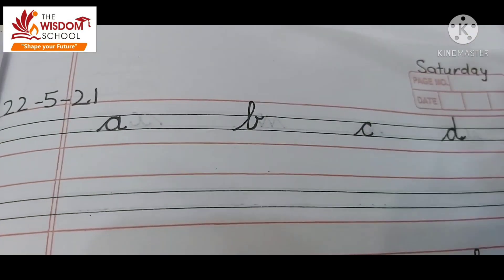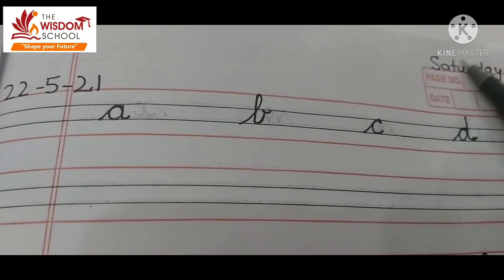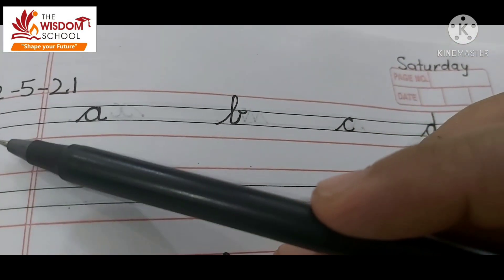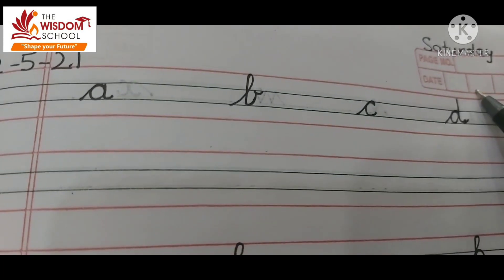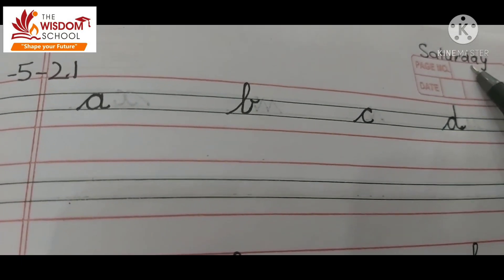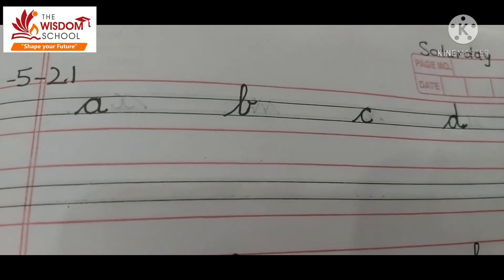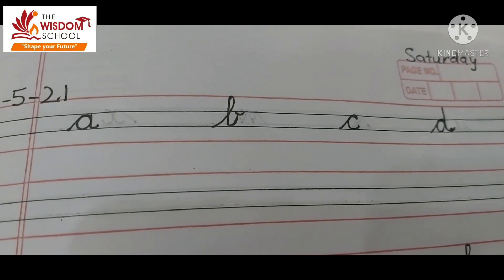And this is the date and day. You will write both of these. Date and day. What is the spelling of Saturday? S-A-T-U-R-D-A-Y. Saturday. Okay? Okay, bye-bye.